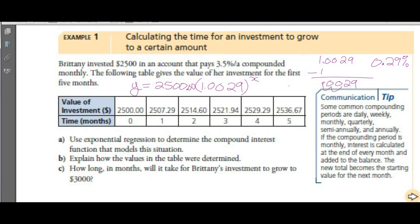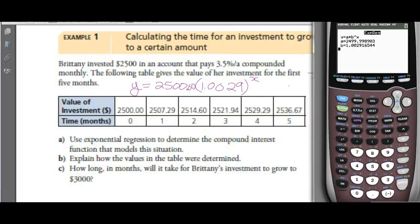Wait — I thought we were getting 3.5%. But here's the deal: she's getting 3.5% per year but it's compounded monthly. So we take 3.5% and change it to a decimal — 0.035 per year — but since she's getting it monthly, we divide by 12, giving 0.0029.